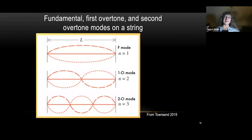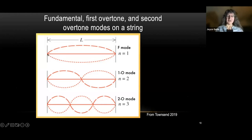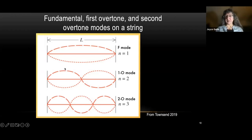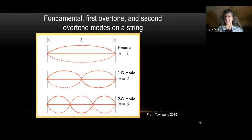Think of pulsation modes like vibrations on a string or jump rope. In the fundamental mode, the whole string goes up or down together with no nodes in the center — similarly the whole stellar surface goes up and then down. In the first overtone mode, there is one node in the center: the top of the star goes up then down while the inside goes the opposite direction. There are also second overtone pulsators, but they're rarer than fundamental and first overtone.